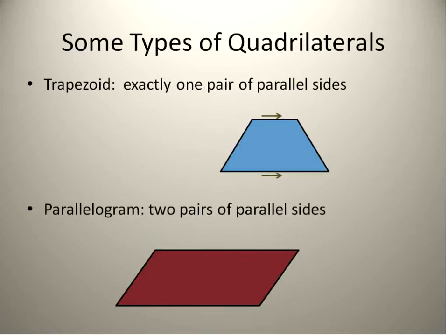First off, a trapezoid is a quadrilateral with exactly one pair of parallel sides. So it only has one set of parallel sides. You can see them here. Those are the two parallel sides of this one and this one, marked and indicated with those green arrows — those two lines would be parallel to each other.